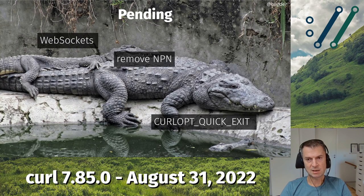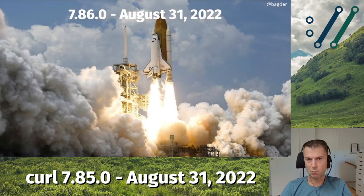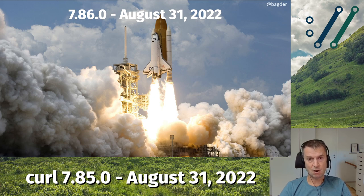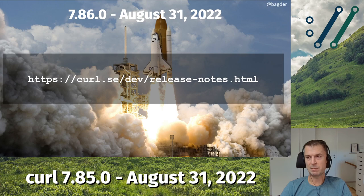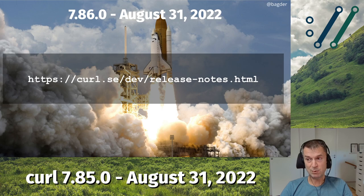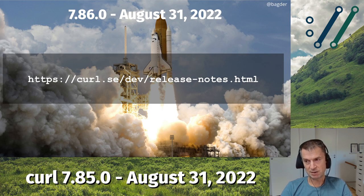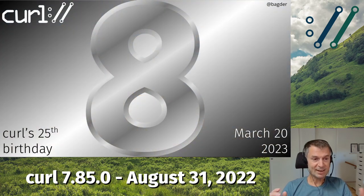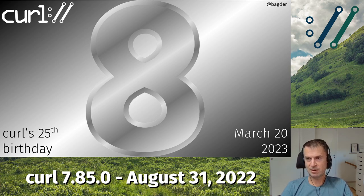The plan is to stick to the schedule and release 7.86.0 on October 25. As a constant reminder, we plan to do curl 8 on curl's 25th birthday, which is in March 2023. It will not be a revolutionary change — just one of our evolutionary changes, like all our releases.